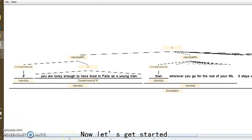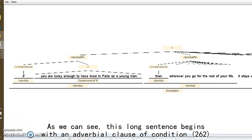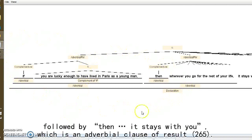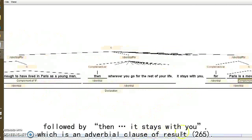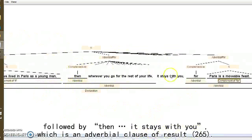Now, let's get started. To save time, I have roughly diagrammed the sentence. As we can see, this long sentence begins with an adverbial clause of condition, followed by then blah blah blah, it stays with you, which is an adverbial clause of result.